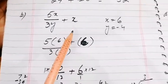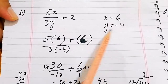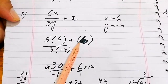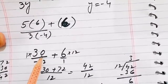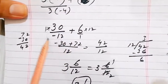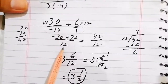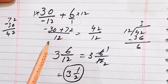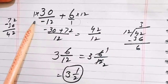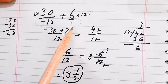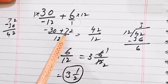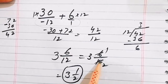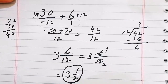For part (b), 5x over 3y plus x: substituting the values, we get 5 times 6 over 3 times minus 4, plus 6. That is 30 over minus 12, plus 6. Taking LCM as 12, we get 12 times 6 equals 72 minus 30, giving 42 over 12, which simplifies to 3 and a half, that is 3 whole 1 over 2.